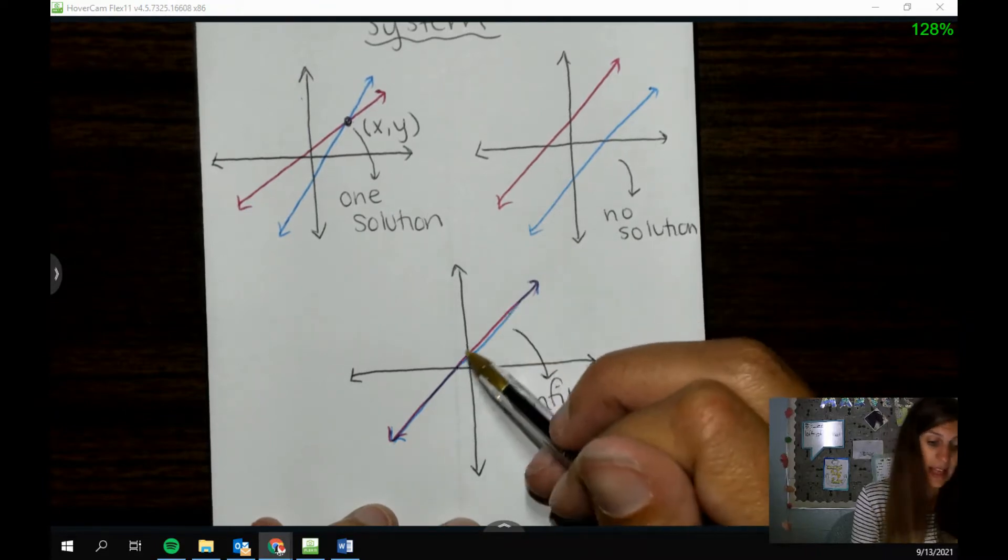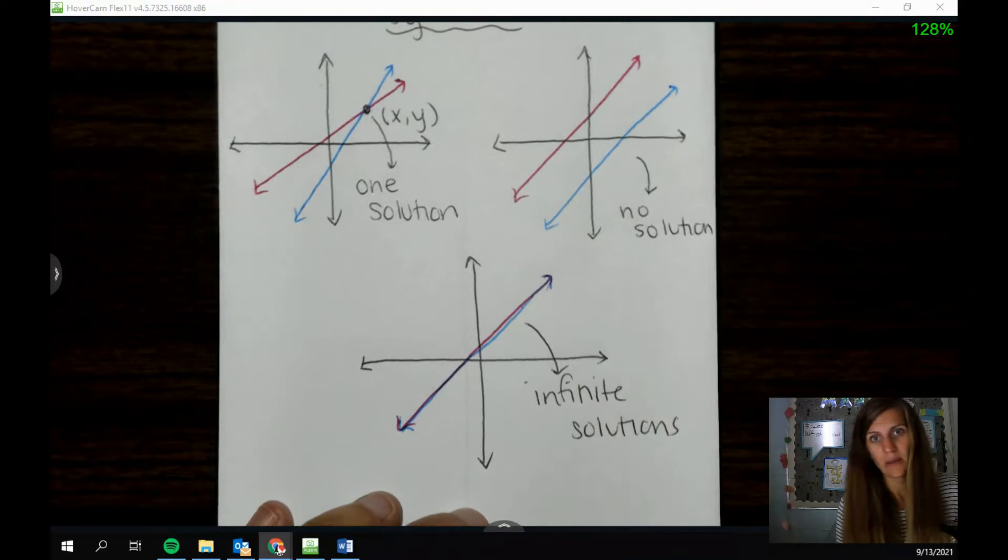So this is a solution, x comma y. This is a solution, x comma y. They're all solutions.